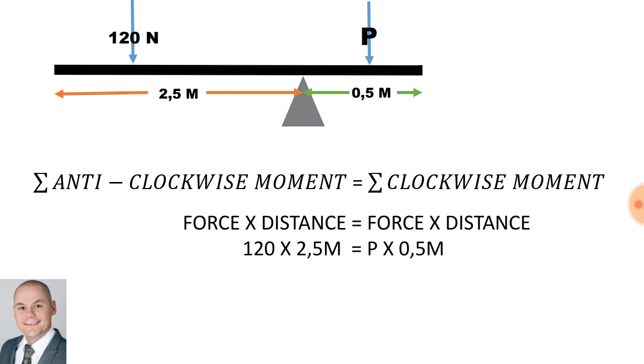And on the clockwise moment, it will be the letter P, the unknown force, multiplied by the distance of 0.5 meters.